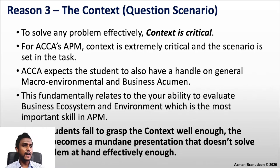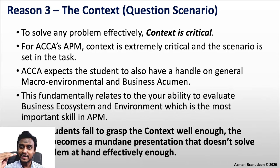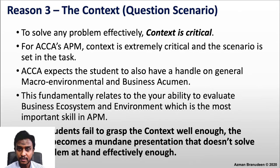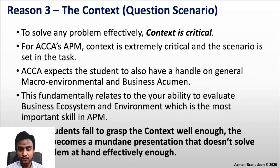When students fail to grasp the context well enough, the answer becomes a mundane presentation that doesn't solve the problem at hand effectively. This is the professional level — the final level and most likely the final paper. APM is layered on top of F2, F5, and SBL. The examiner wants you to dig deep into your strategic capabilities, and if you can't understand a situation and respond to it effectively, your answer will not be written at the required quality.